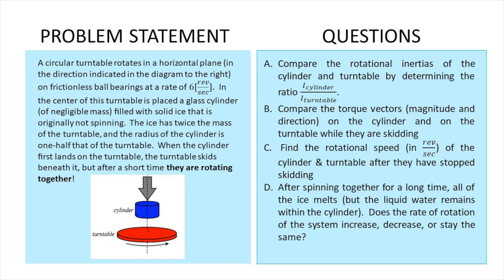We have a circular turntable that rotates in a horizontal plane in the direction indicated in the diagram, on frictionless ball bearings at a rate of six revolutions per second. In the center of this turntable is placed a glass cylinder with negligible mass, filled with solid ice that is originally not spinning. The ice has twice the mass of the turntable, and the radius of the cylinder is one half that of the turntable.